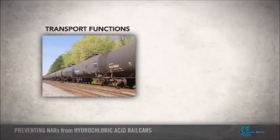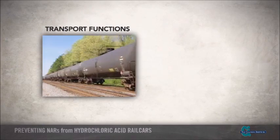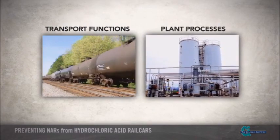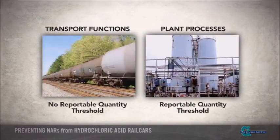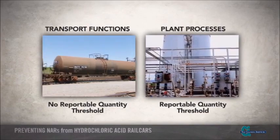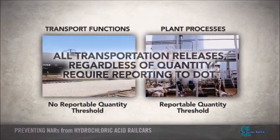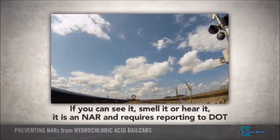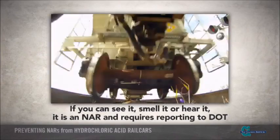Releases that occur during transportation functions are reported differently than releases within plant processes. The primary difference is that for transportation-related releases, there is no reportable quantity threshold, or RQ, as established by the U.S. Environmental Protection Agency, or EPA, which needs to be reached to trigger reporting. All transportation releases, no matter the quantity, require reporting to DOT. Basically, if you can see it, smell it, or hear it during transportation functions, it is an NAR and requires reporting to DOT.